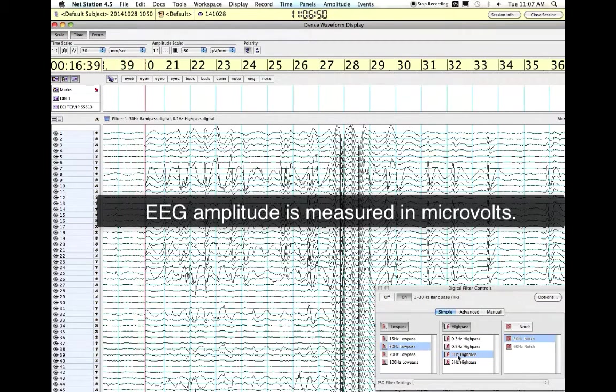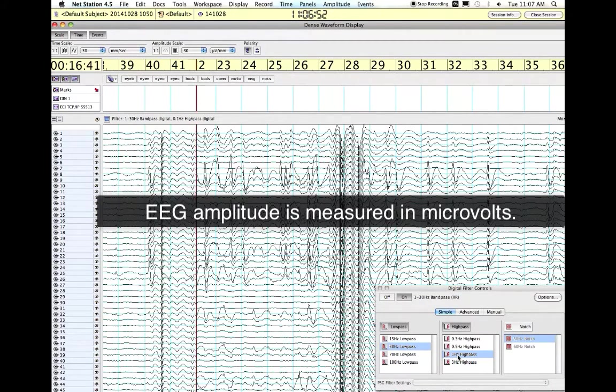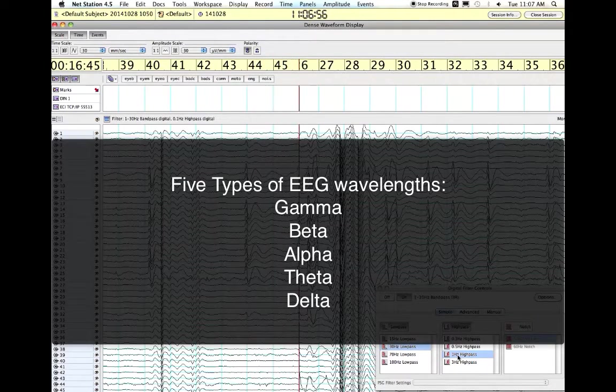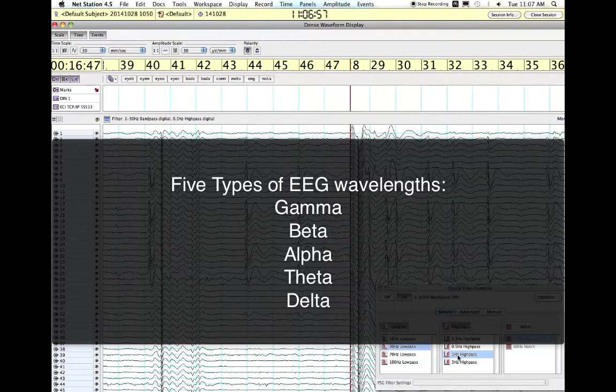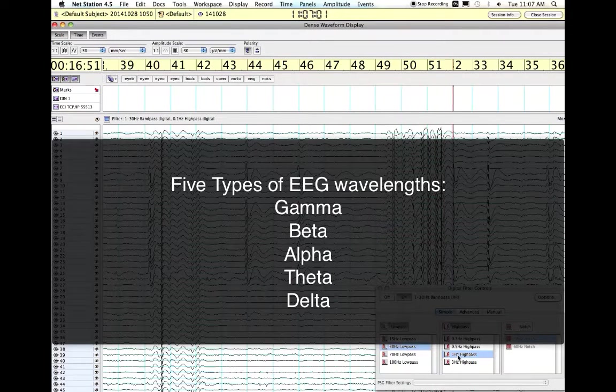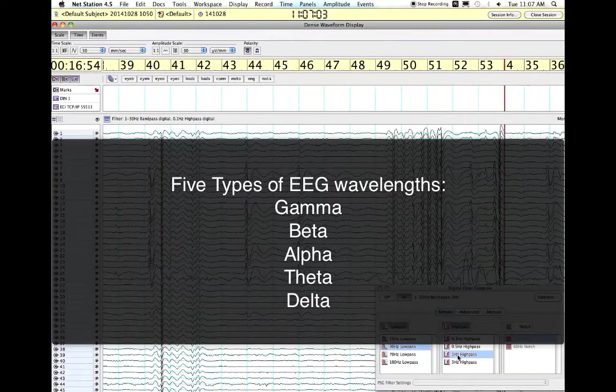EEG amplitude is typically measured in microvolts, and the wavelengths are divided into five different bands, which are determined based on the frequency oscillations. The five frequency bands are gamma, beta, alpha, theta, and delta.